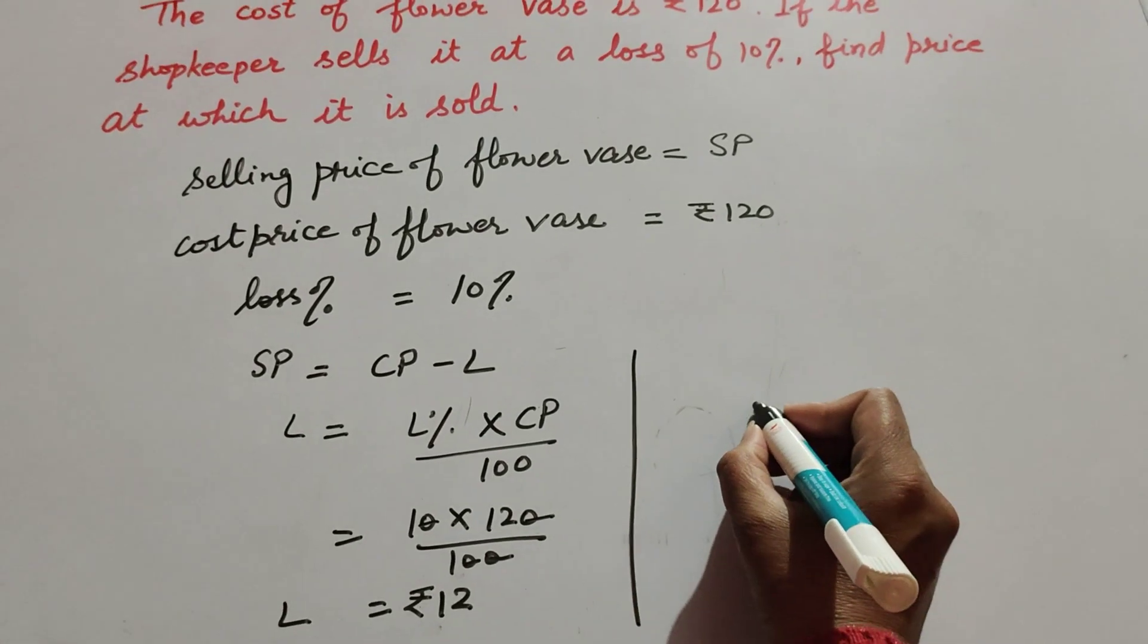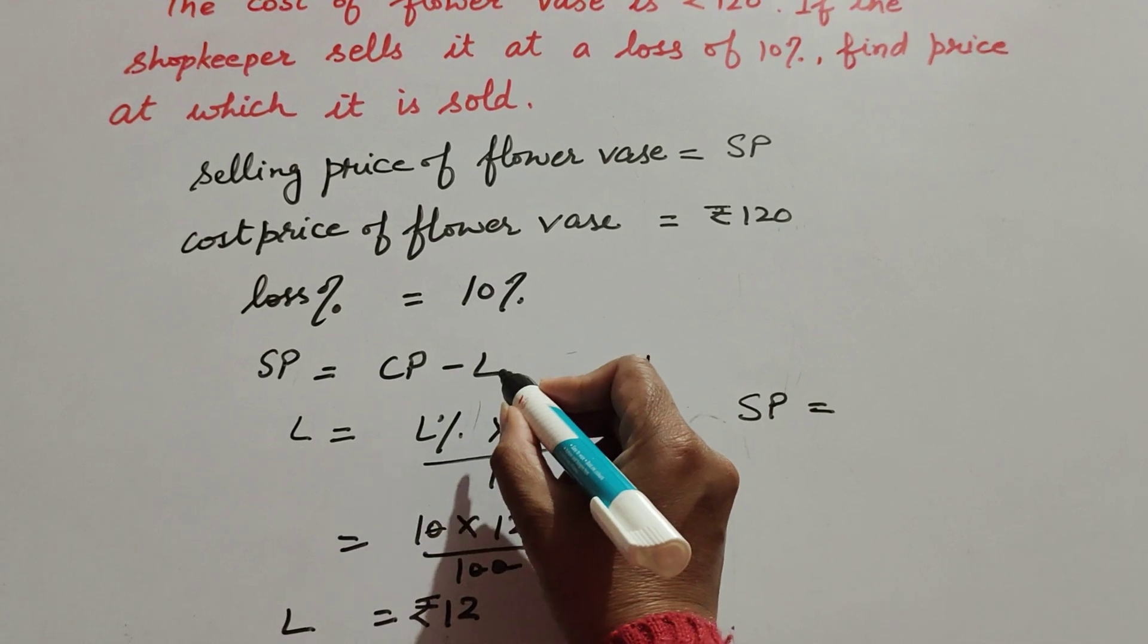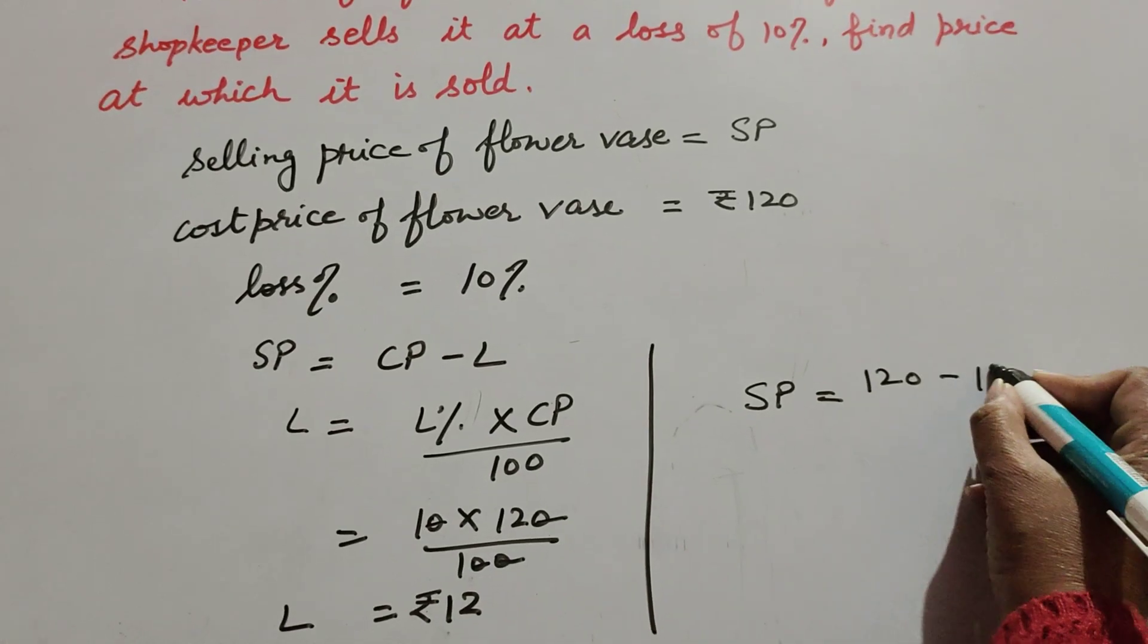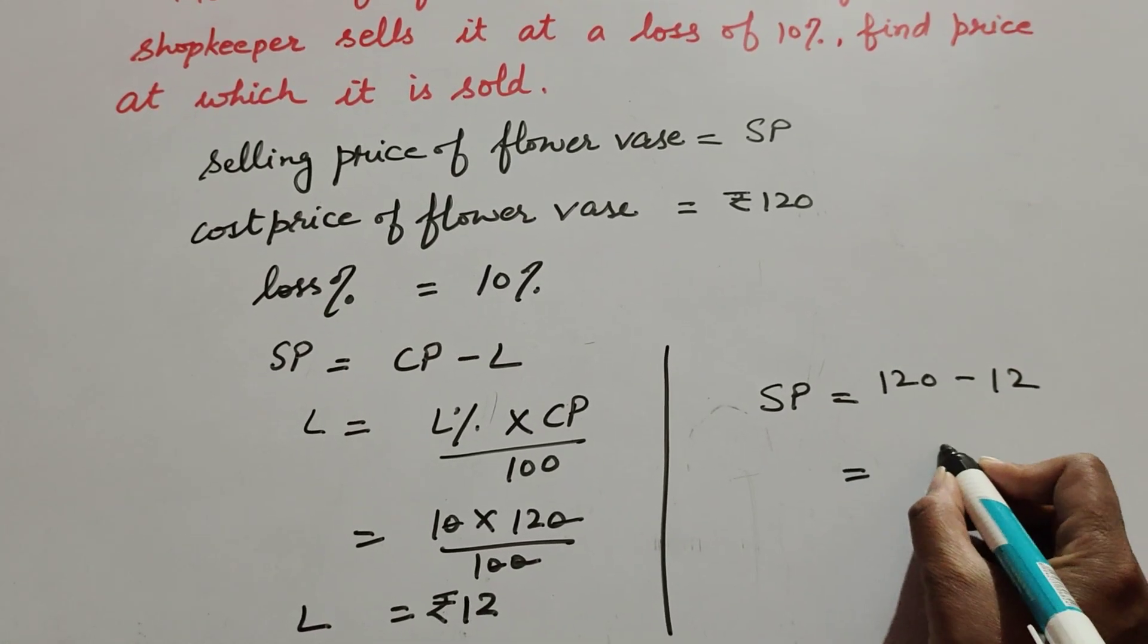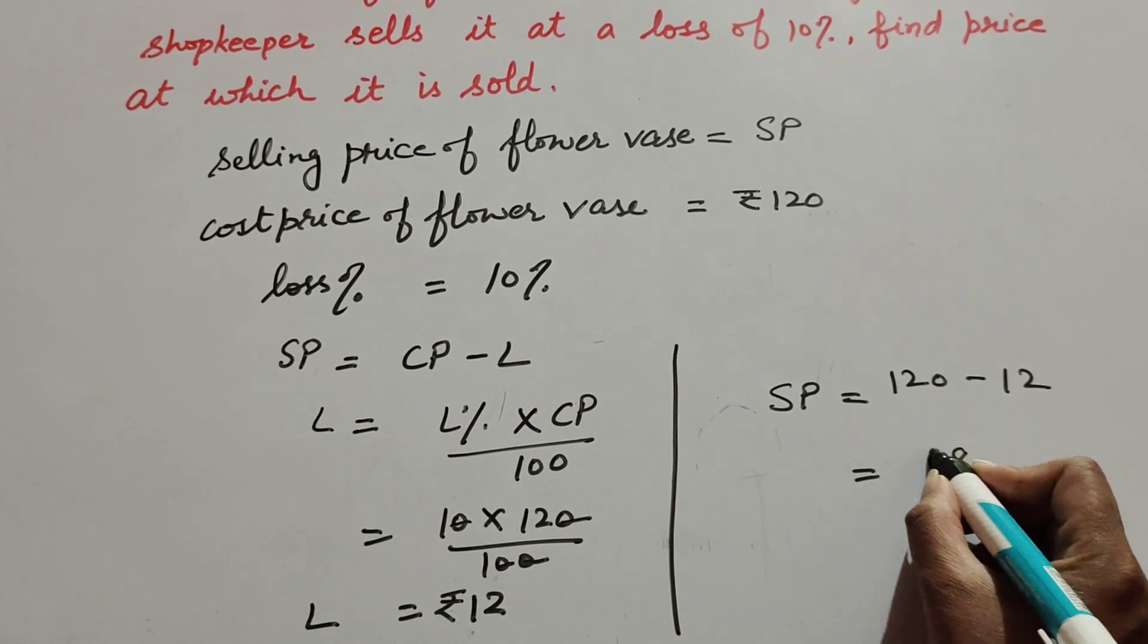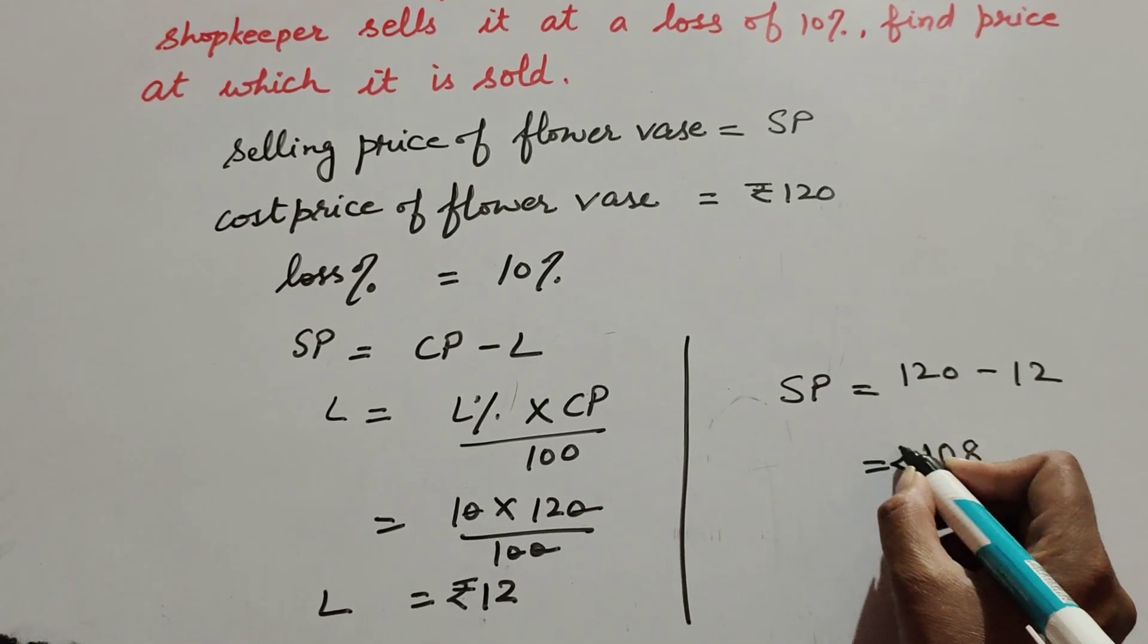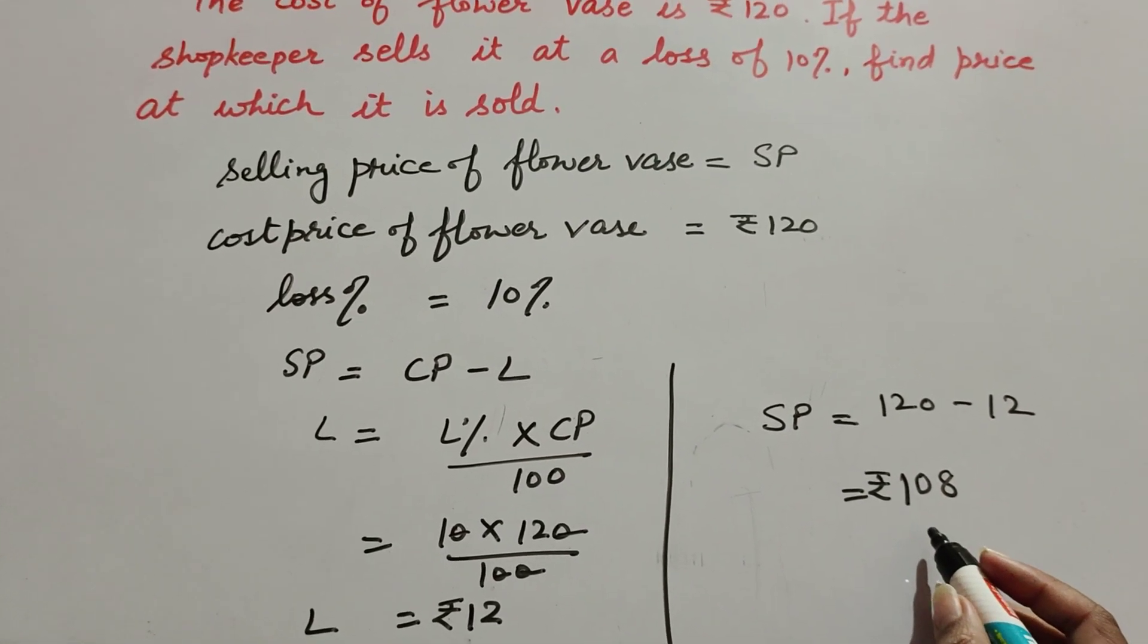Now we find the selling price. It is equal to cost price minus loss. Cost price is equal to 120 minus loss which is 12, equals 108. So the selling price of the vase is equal to rupees 108.